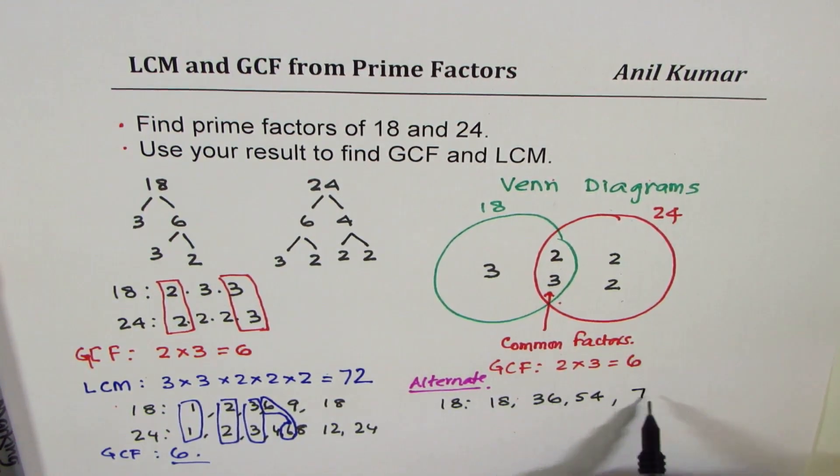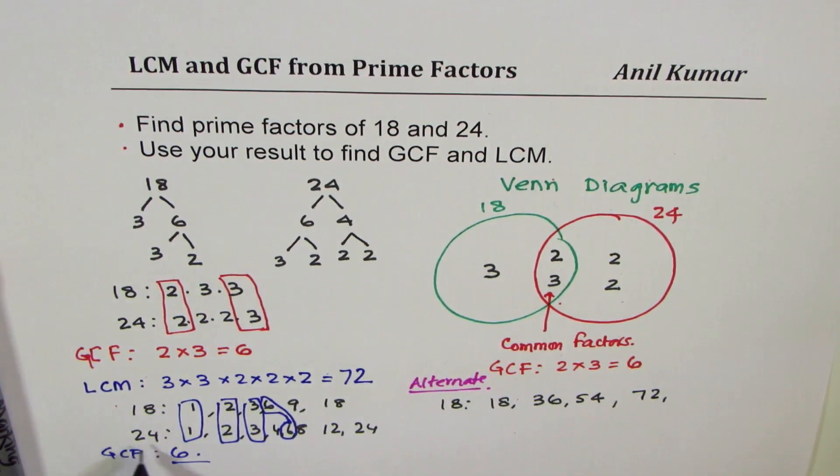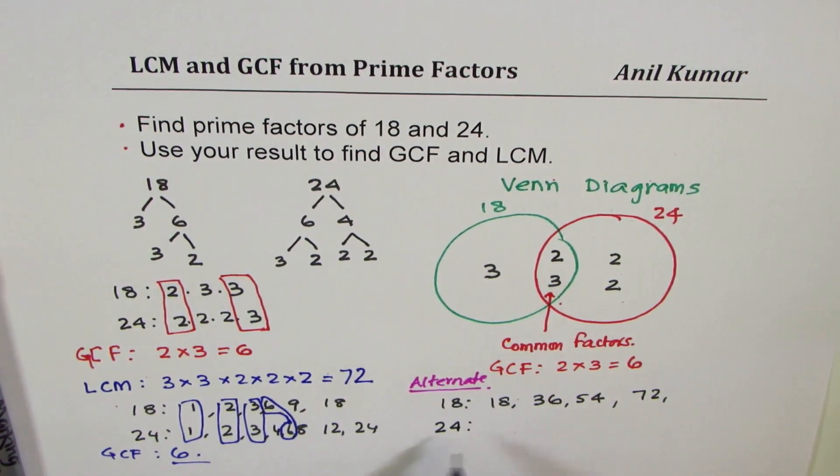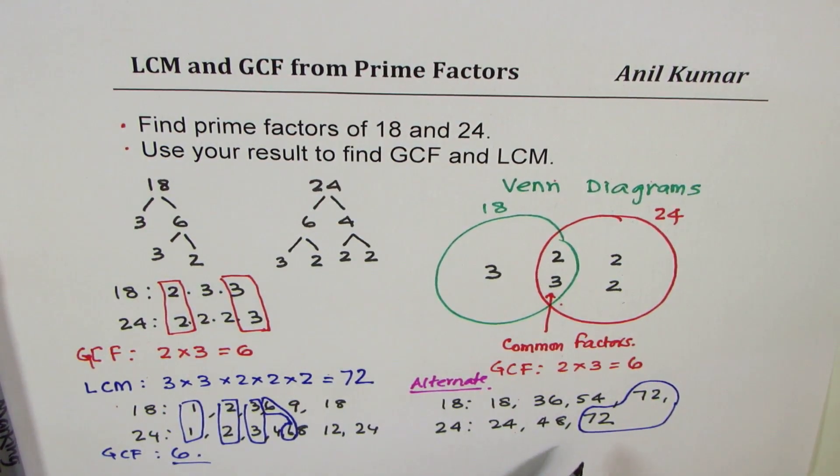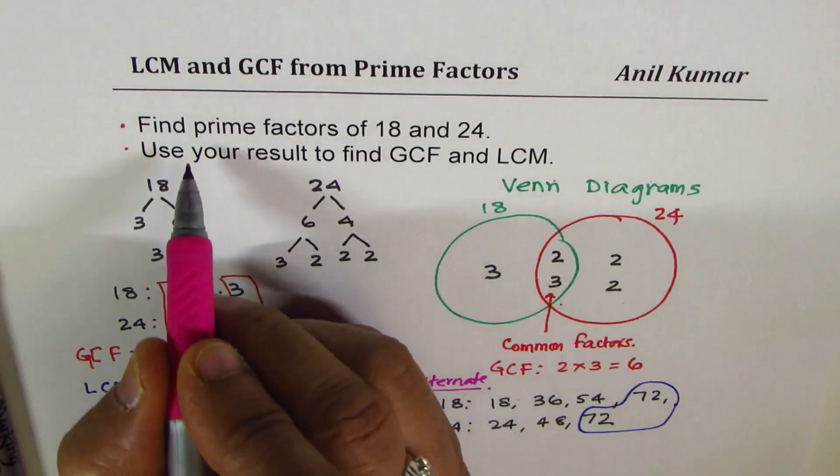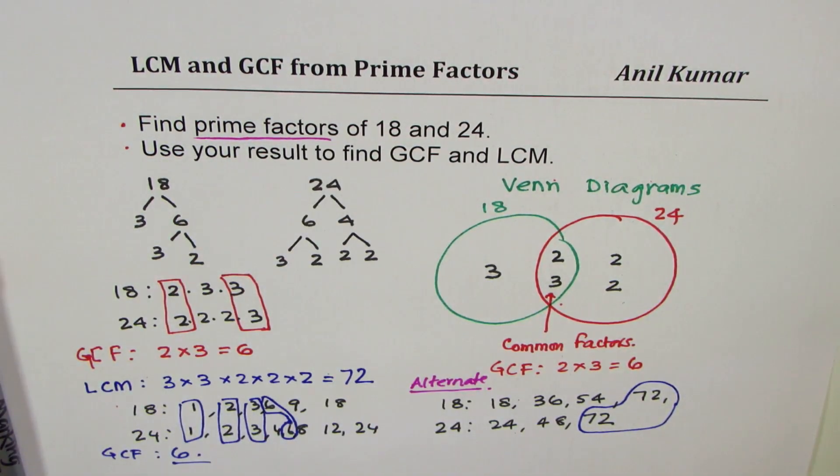And for 24, the multiples will be 24, 48, and then 3 times 24, 72. So we clearly see that the lowest common multiple is 72. But we have to write all the multiples. At times, this list could be very, very long. And therefore, the method which we have adopted using prime factors becomes a very effective method.